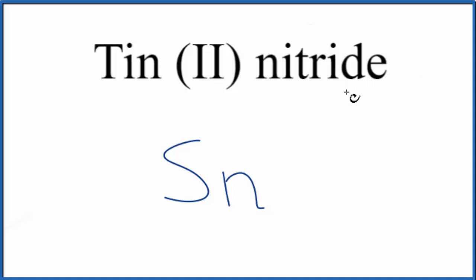And then this nitride, it ends in IDE. That means it's just going to be a single element. It's going to be that nitrogen atom there. So we have SnN for our formula.